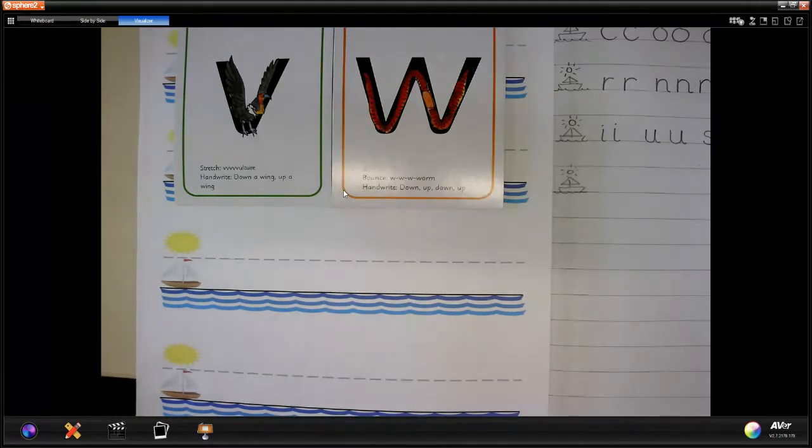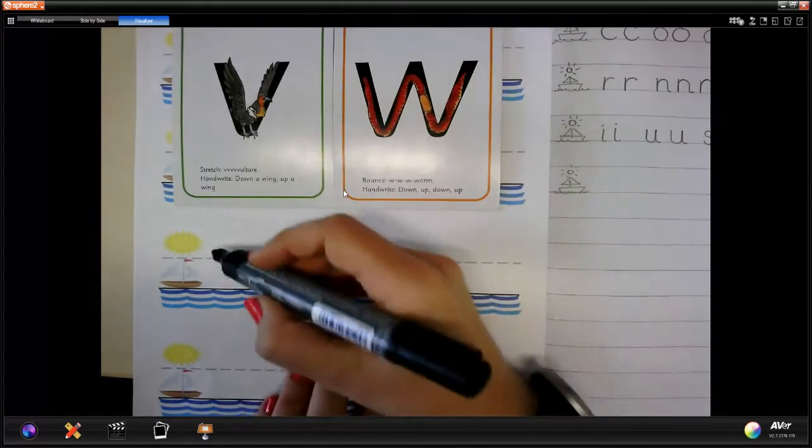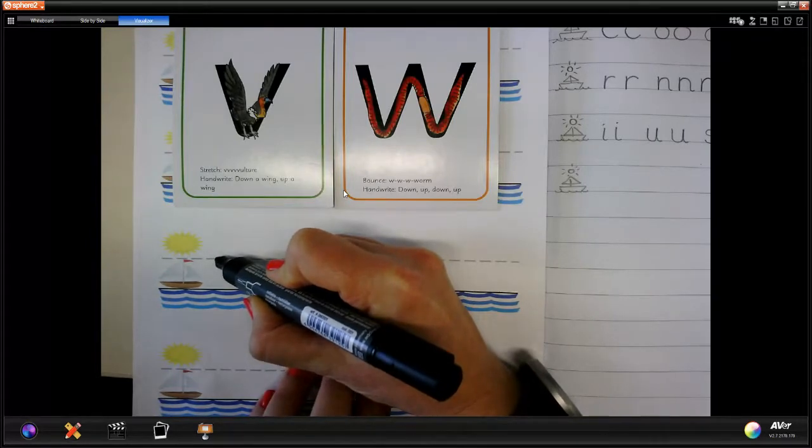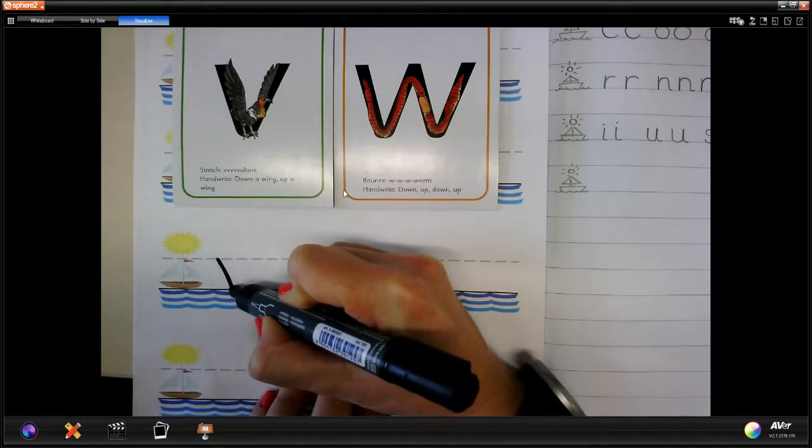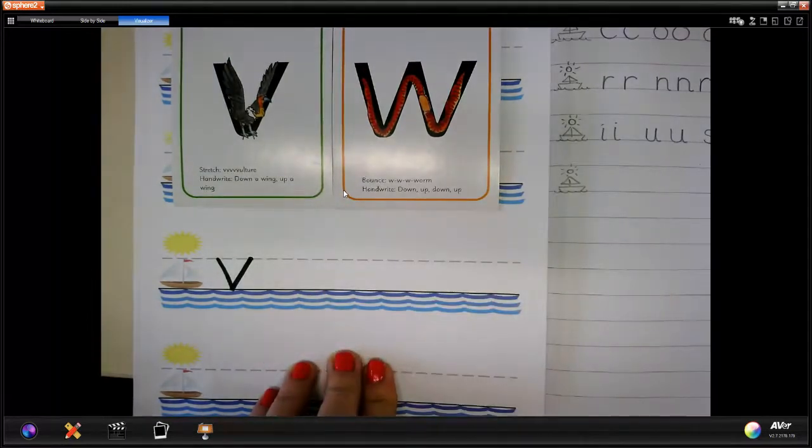Now, let's have a look at our V, our Vulture. He's got his wings stuck up, so I'm going to start at the top, the same height as our boat. I'm going to go down one wing to the line and up the other wing, our V.